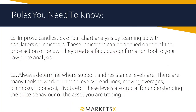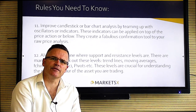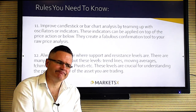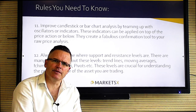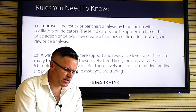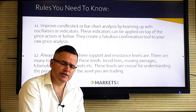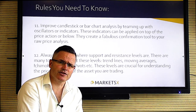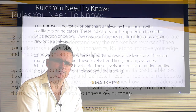Rule eleven: candlesticks and bar charts work nicely on their own, but it's about putting the odds and probability on your side. You can do that by adding indicators and applying tools from independent sources to give you a different opinion that comes out with the same conclusion — fabulous confirmation tools. Rule twelve: determine where your support and resistance levels are — very important for trade and risk management. Tools like Fibonacci, pivot points, trend lines, and bands are all approaches you can use.